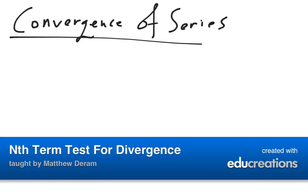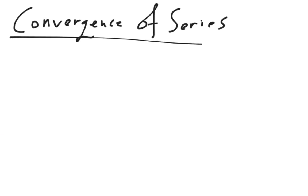This video is similar in idea to the convergence of sequences, but this is about convergence of series. This is a much more difficult question, because instead of just looking at a list of numbers, we have to look at what happens when you add up an infinite amount of numbers in that list. In this video, we're specifically going to look at something called the nth term test for divergence.